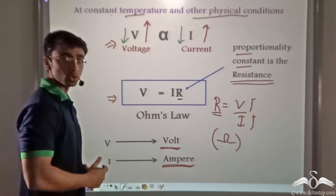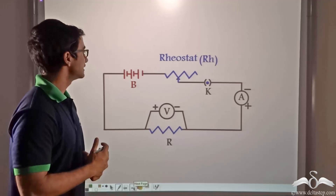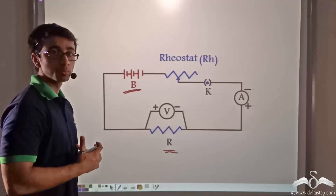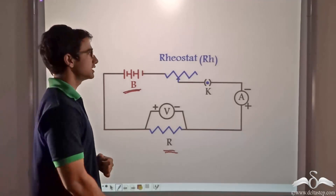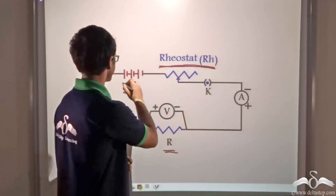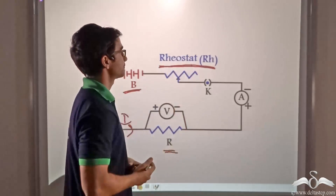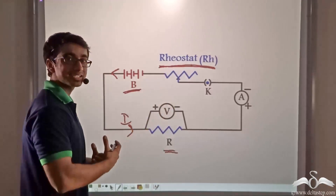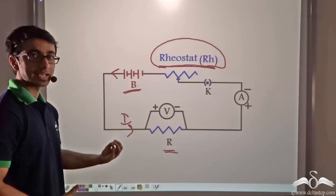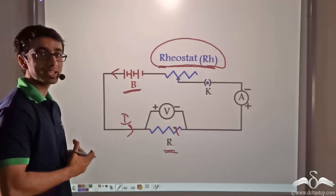Let us see how we can verify Ohm's law. First we consider a simple circuit arrangement. In this circuit, a battery has been considered along with a resistance across which Ohm's law will be verified. We have also included a variable resistance in order to regulate the flow of current in the circuit. The current flowing in the circuit will be regulated by the value of this variable resistance.